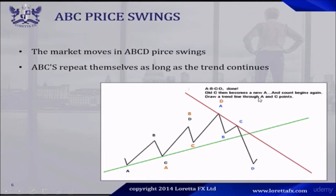Draw a trend line through the A's and C points — connecting the A's and the C's. Remember, all C's become a new A, so we can always say A again. After A's we have B's, after B's we should have C's, after C's we have D's. Whenever we are at C, we can always start again with A, B, C.